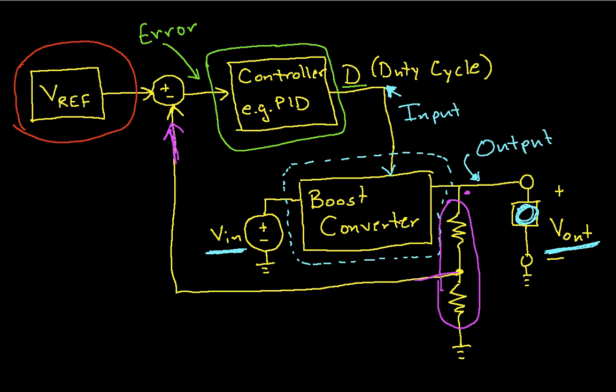It's compared with Vref. And the idea behind this sort of control theory approach to it is if the error is positive, which means that Vref is higher than our Vout, or in other words, that our Vout is too low, then the controller will adjust the duty cycle to make Vout go higher.